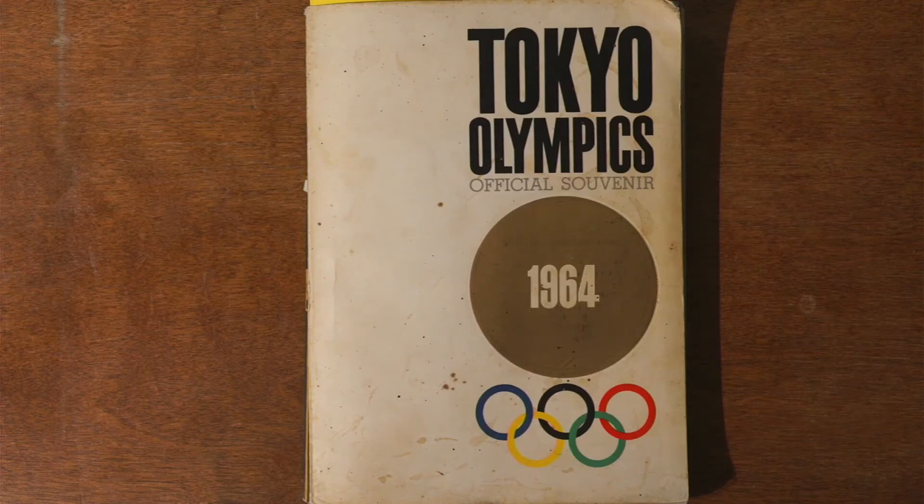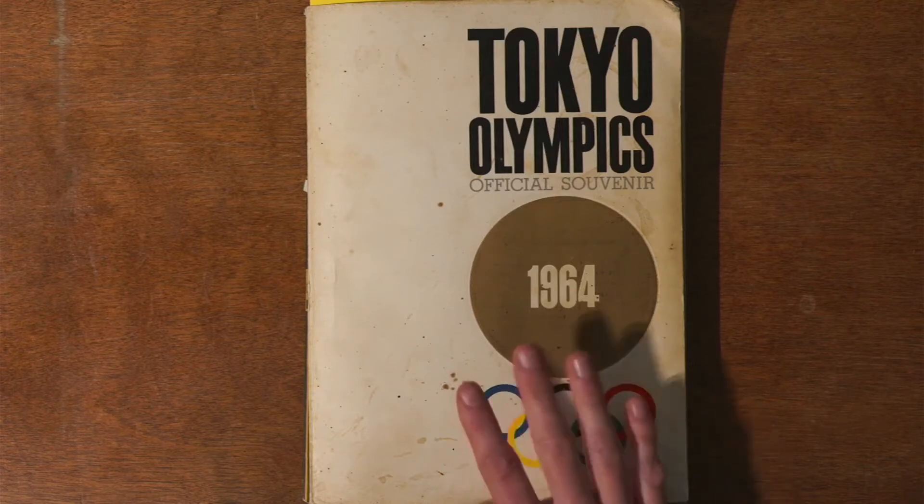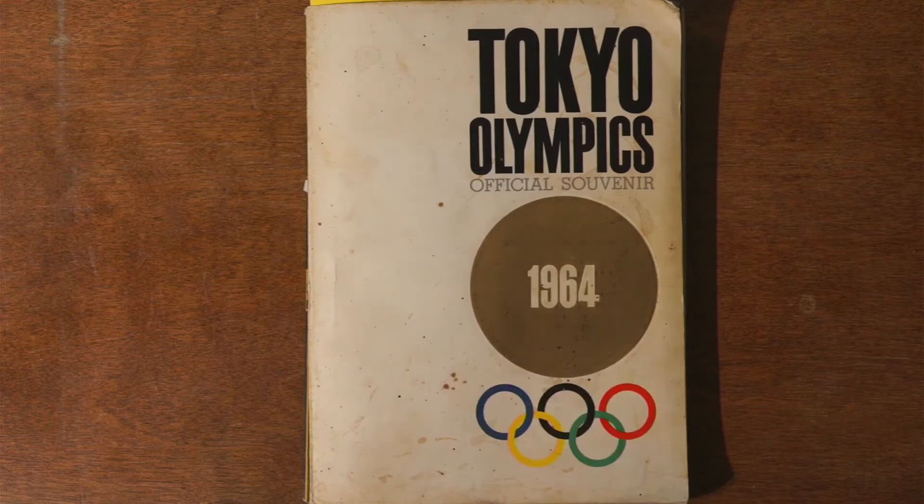So today I would like to go through the Tokyo Olympics official souvenir guide from 1964. This copy was found in a thrift store right near here in Montgomery, Alabama.